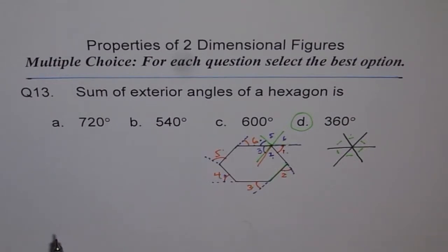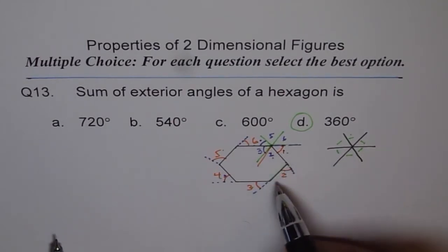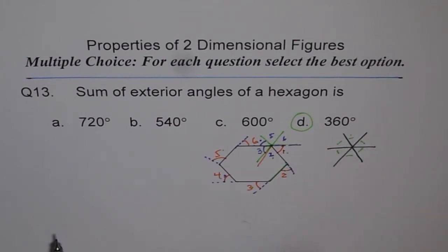For any polygon - maybe hexagon, octagon, decagon, anything. Any number of sides. The sum of exterior angles is always 360 degrees. Do you see that? And that is the reason. Just draw - bring all the angles together with common vertex. You will find them to make one full circle. So it is 360 degrees. So that is our answer.